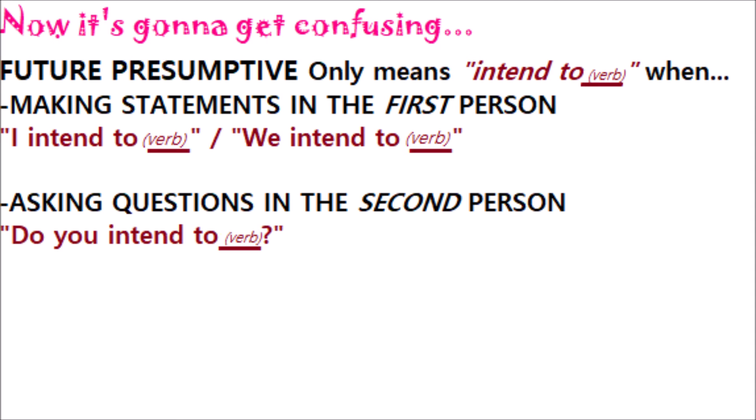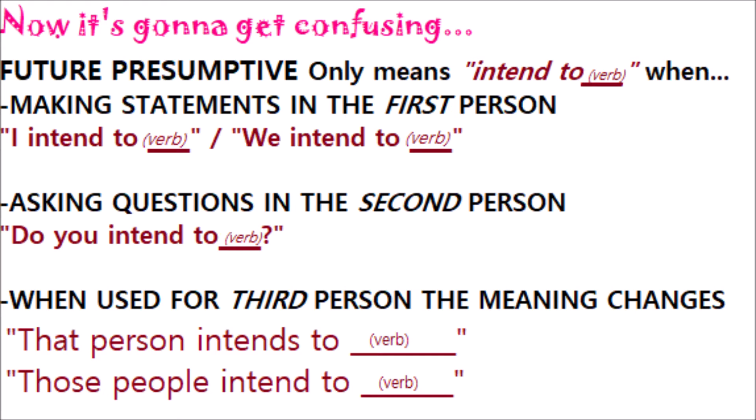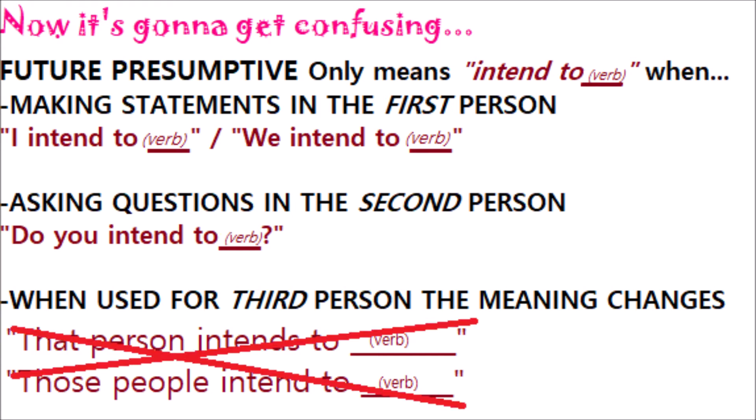You can also ask other people, 'Do you intend to blank?' But, strangely enough, it does not work the same way in the third person. You can't say 'that person intends to blank' or 'those people intend to blank,' because you cannot truly know what other people intend to do.